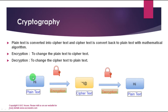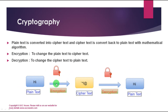In cryptography, a plaintext is converted into ciphertext and ciphertext is converted back to plaintext using mathematical algorithms. Converting plaintext to ciphertext is called encryption. Converting ciphertext back to plaintext is called decryption.